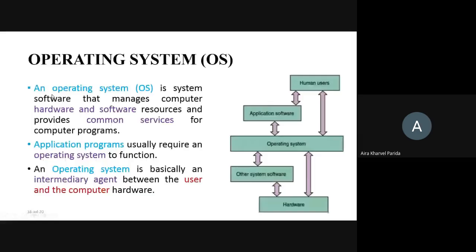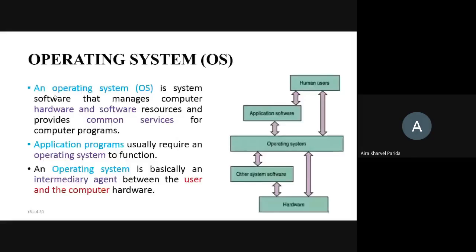An operating system is a system software that manages the computer hardware and software resources and provides common services for computer programs. In other words, the operating system acts like a bridge between the user and the computer hardware. The application program usually requires an operating system to function, and the operating system is basically an intermediary agent between the user and the computer hardware.